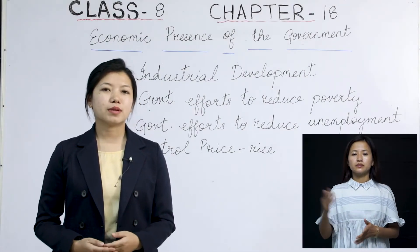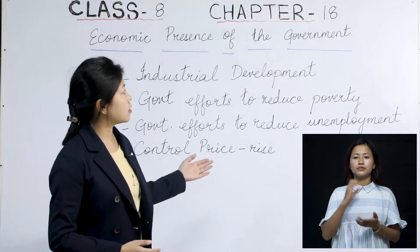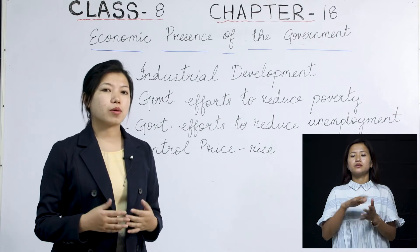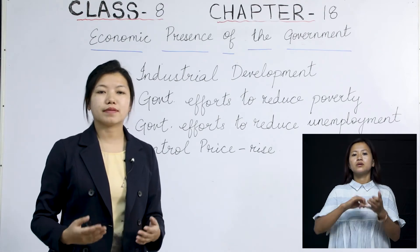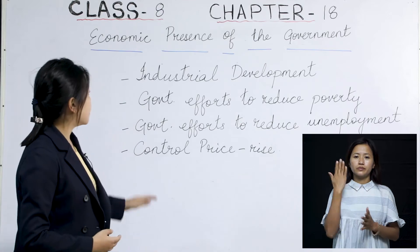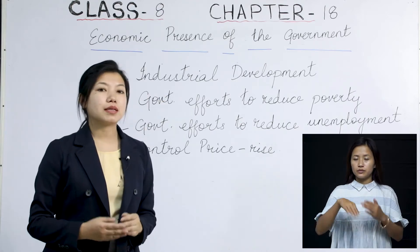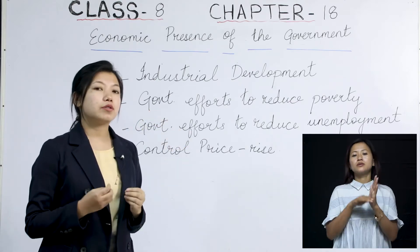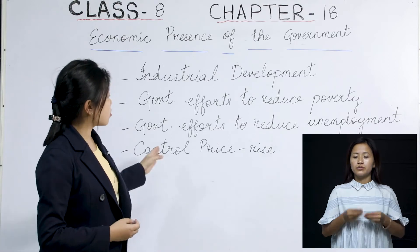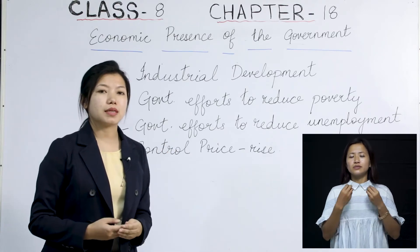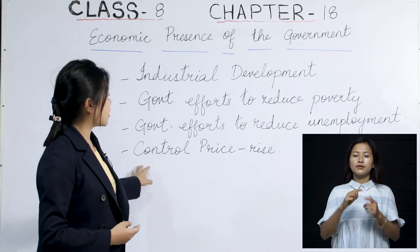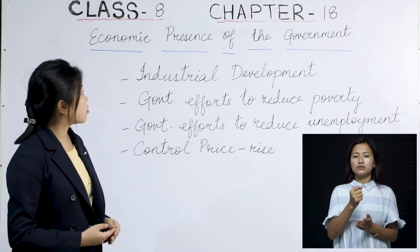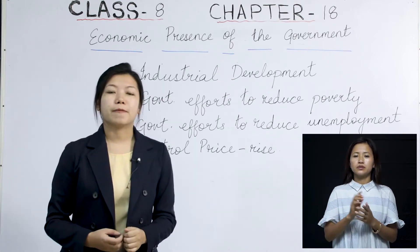Welcome students to the second part of Chapter 18, that is Economic Presence of the Government. Today I'm going to explain about industrial development, government efforts to reduce poverty, government efforts to reduce unemployment, and how price rise can be controlled.